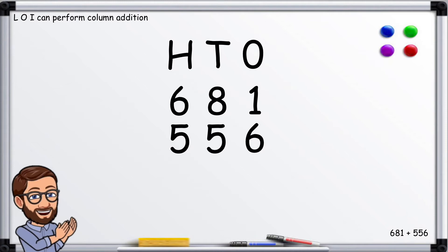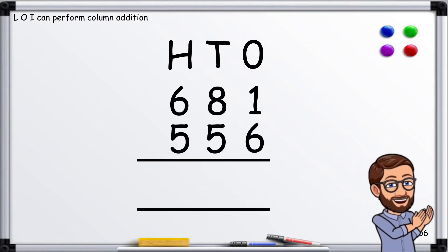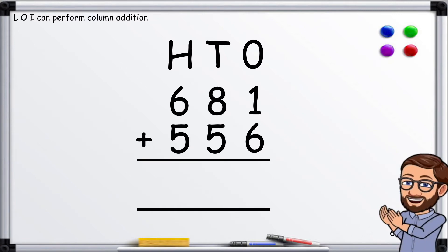Then we place the numbers on top of each other, lining up the ones digit, and we draw two lines and a plus sign. First we add the ones column, so 1 plus 6 equals 7, and we place that below.